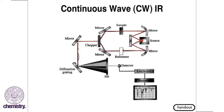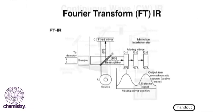The way we actually do IR sampling these days is with FT-IR. The FT stands for Fourier transform. In order to understand how this works, we need to understand what a Michelson interferometer is.